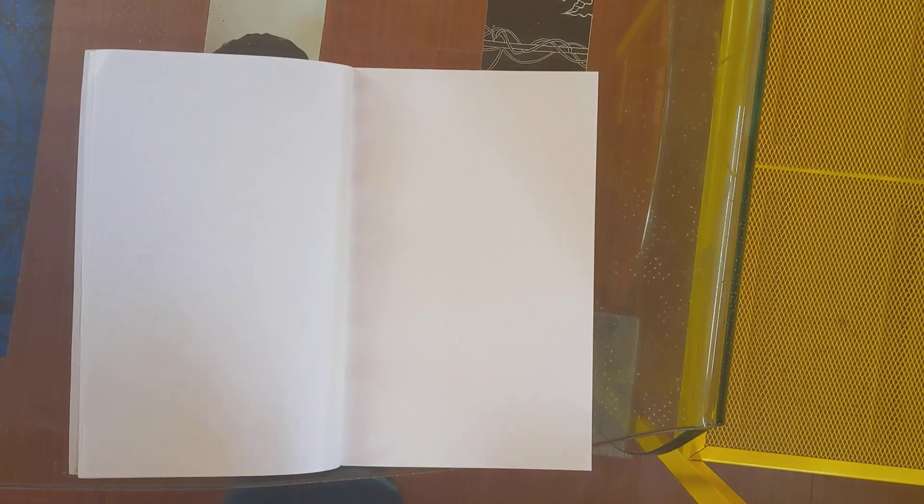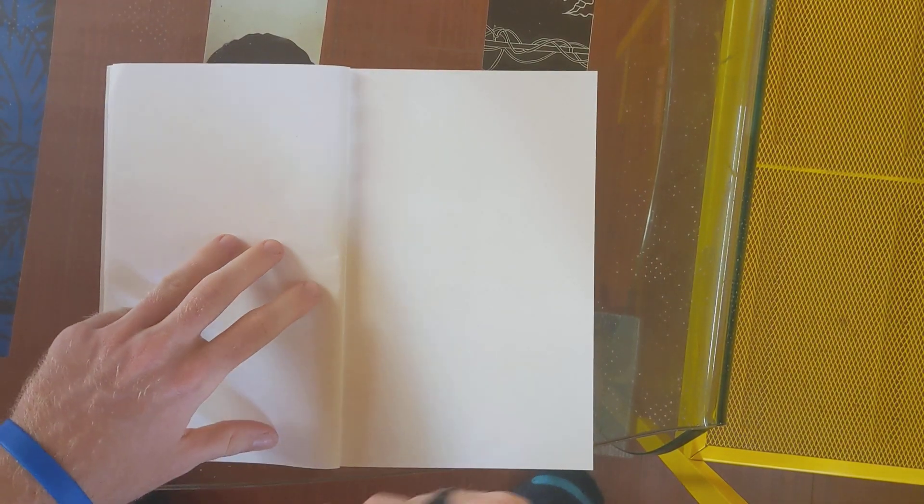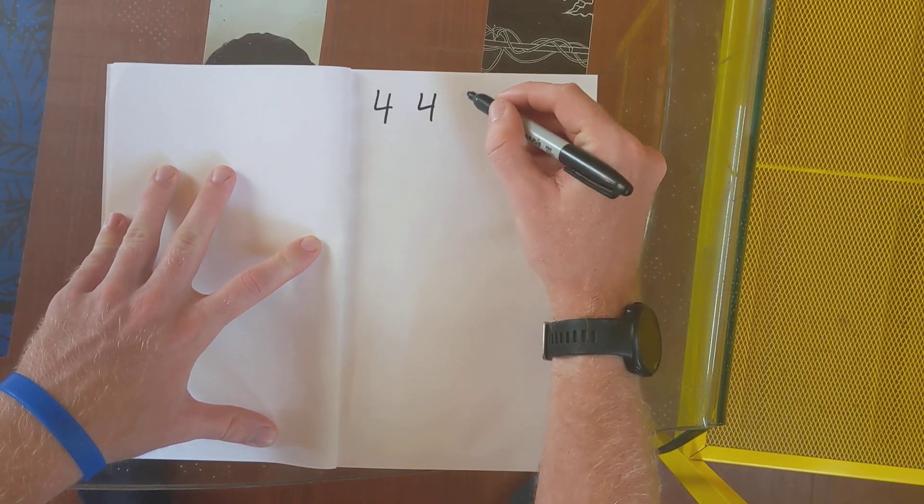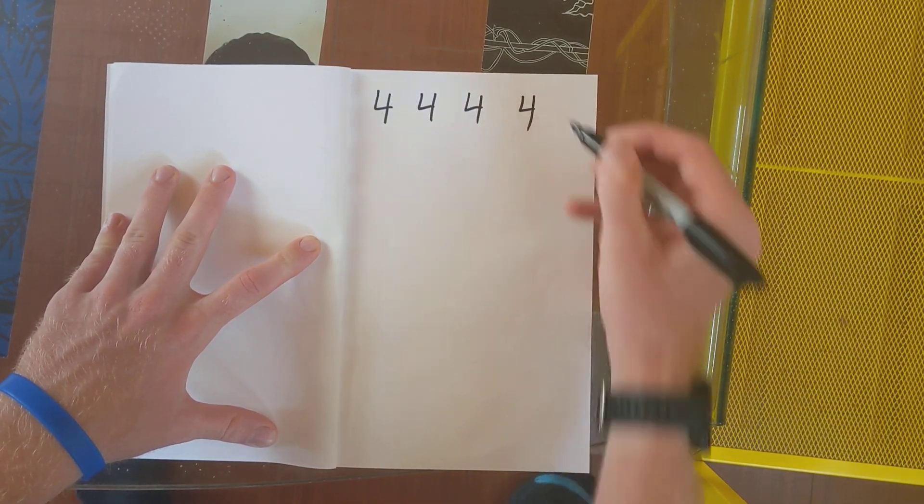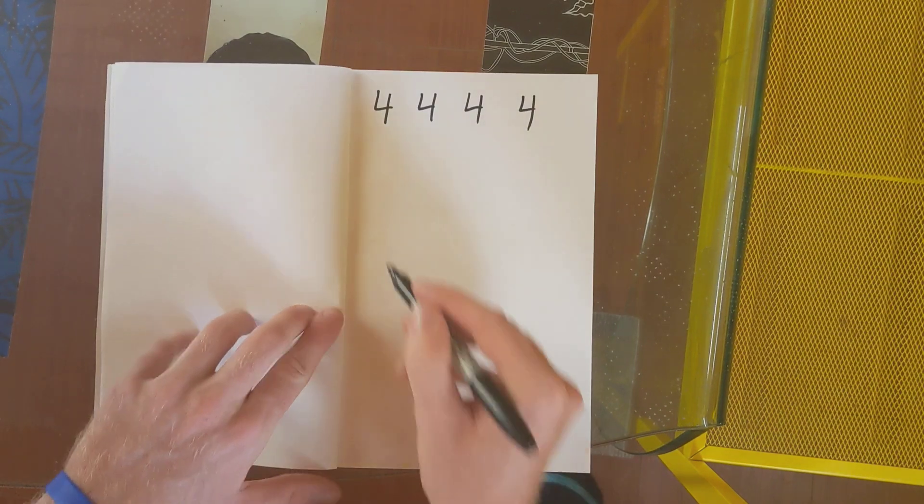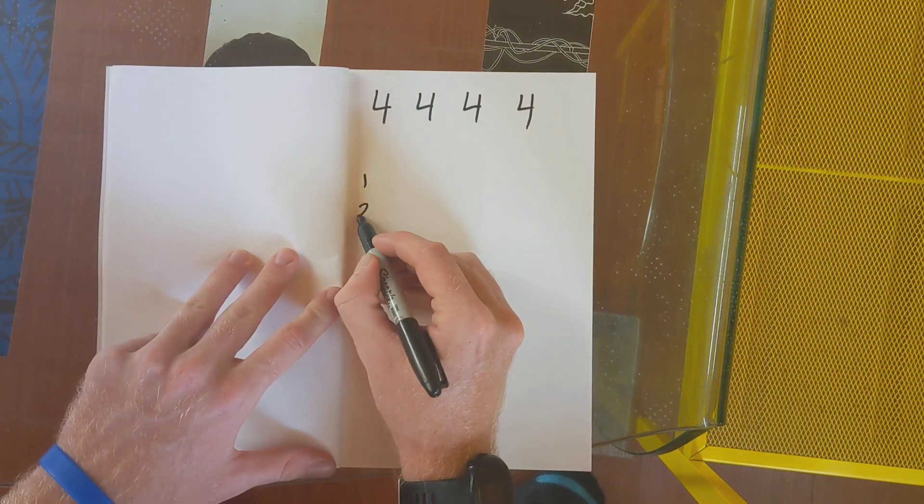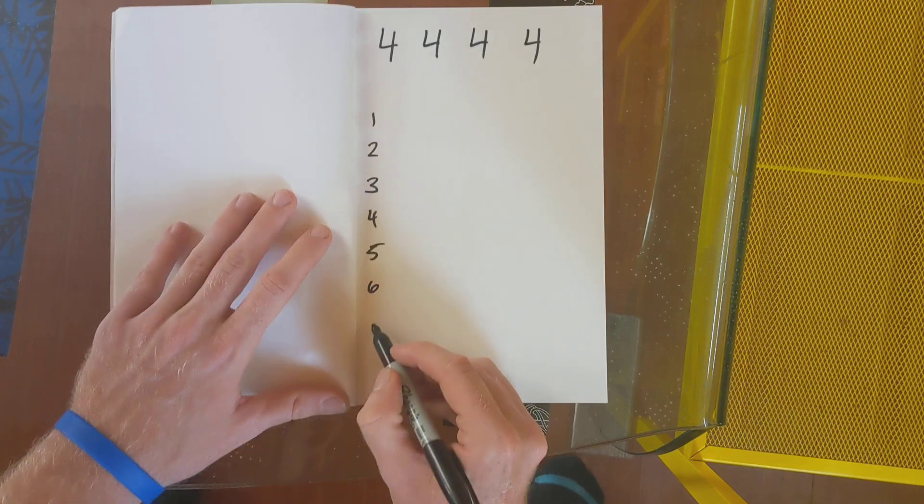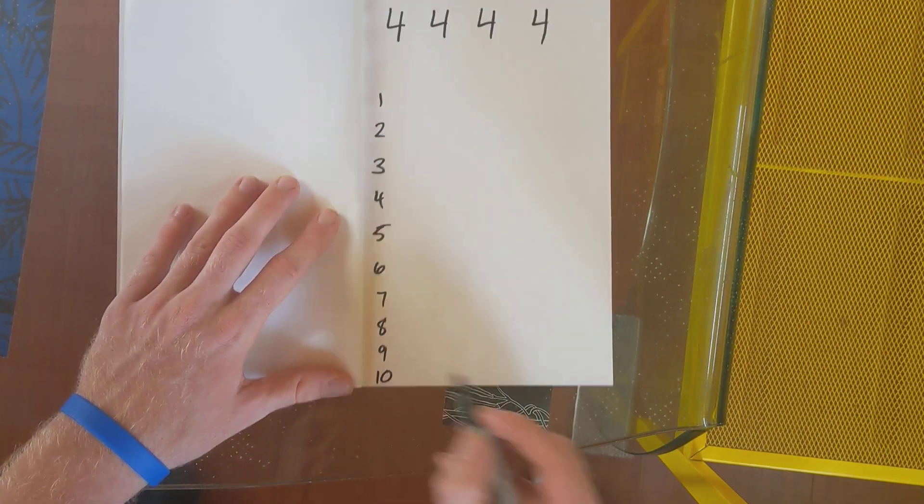All right are you ready to go? Today we will do something called the four fours challenge. You have to use the number four, one, two, three, four times to get all the numbers from one to ten. Five, six, seven, eight, nine, and ten.